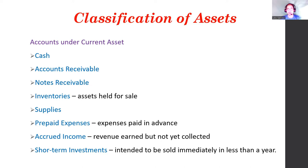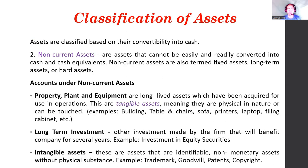Non-current assets are assets that cannot be easily and readily converted into cash and cash equivalents. They are also termed fixed assets, long-term assets, or hard assets. Accounts under non-current assets include property, plant, and equipment — long-lived assets acquired for use in operations. These are tangible assets, meaning they are physical in nature and can be touched. Examples include buildings, tables, furniture, printers, computers, and filing cabinets.